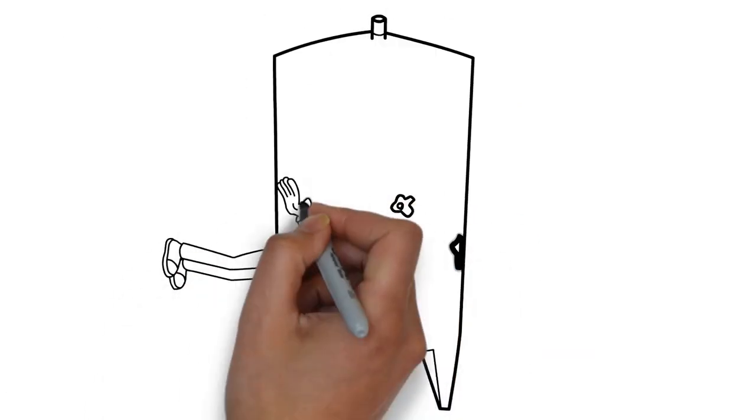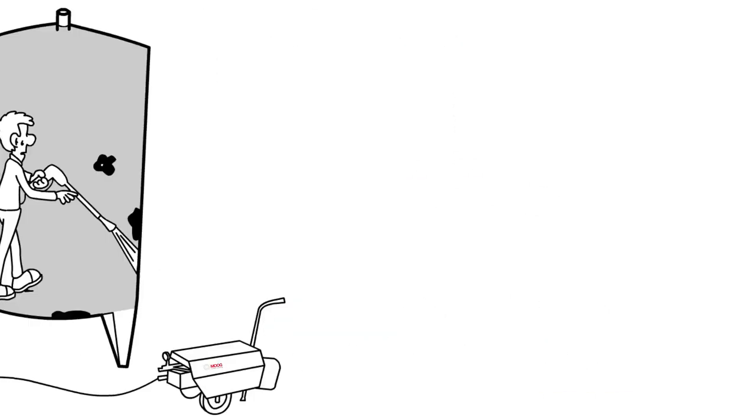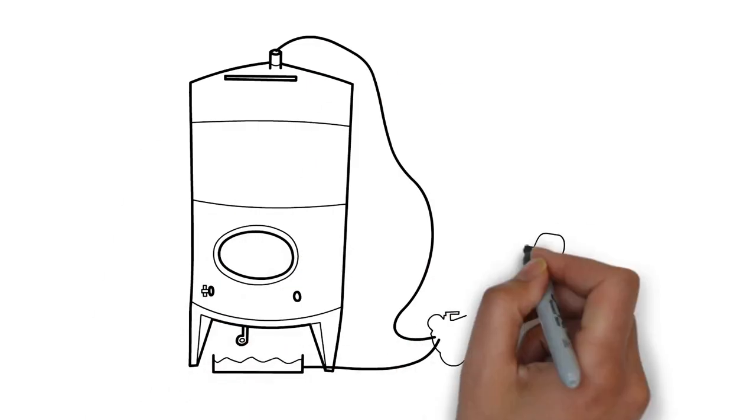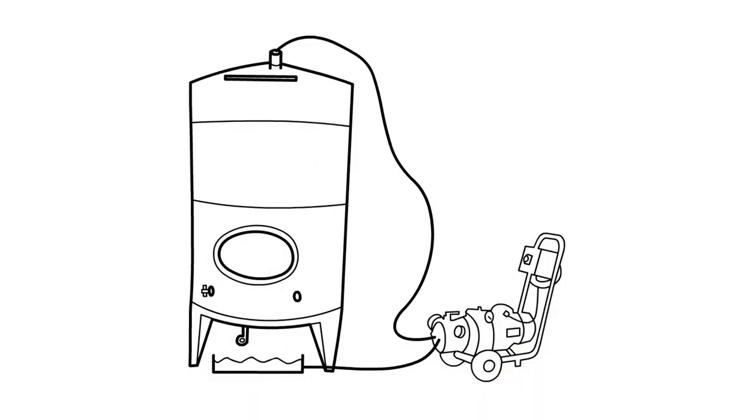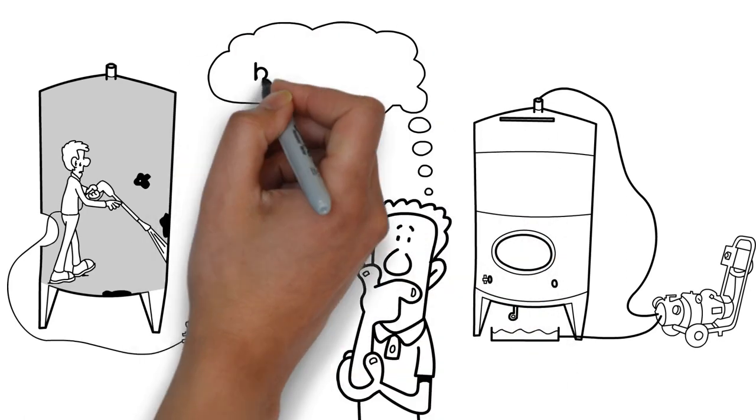That means either climbing clumsily into the tank to clean by hand using a high-pressure lance or cleaning several times over with hot water and a cleaning agent to remove stubborn debris. Isn't there a better way to clean that uses less water and time without manual effort?